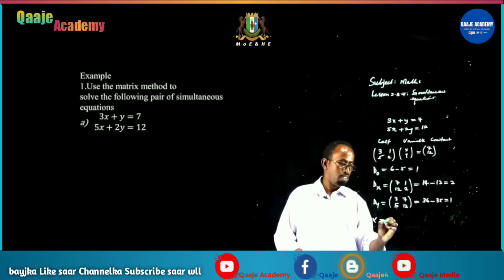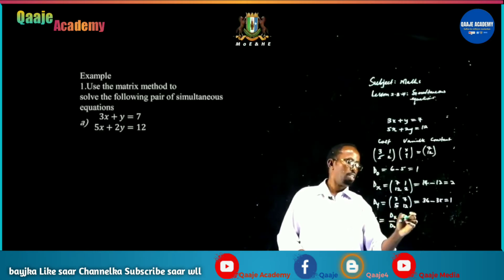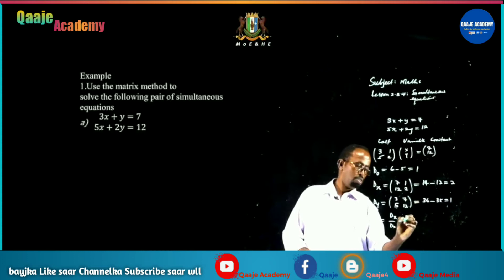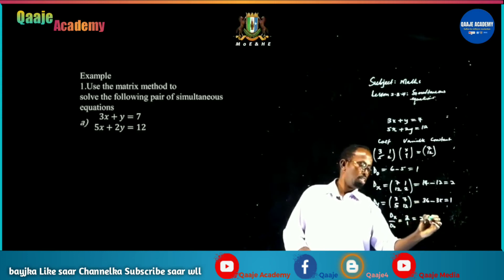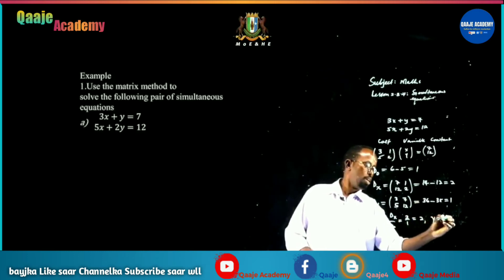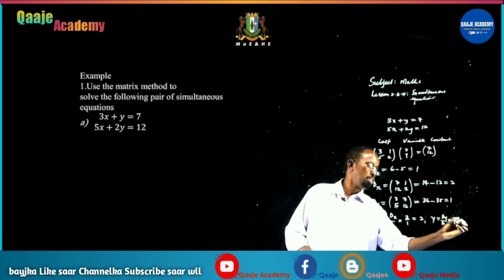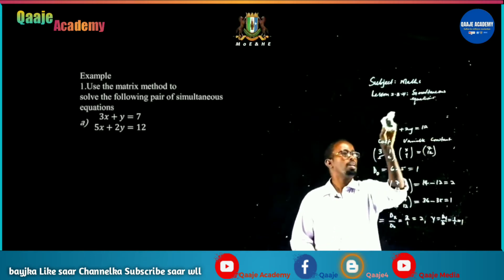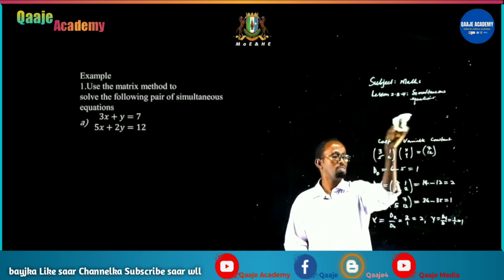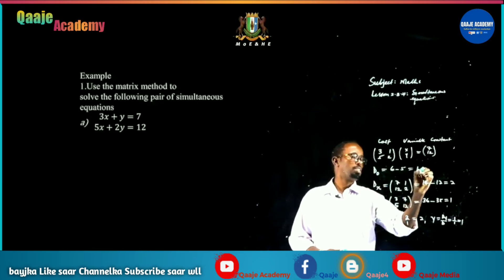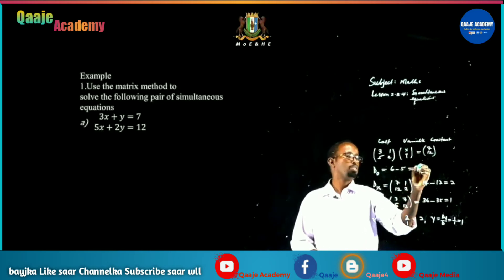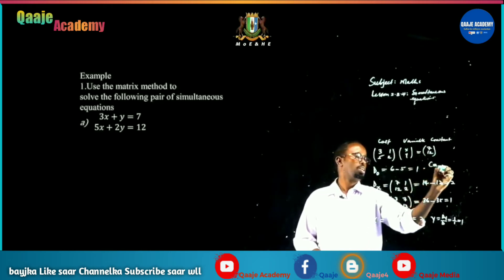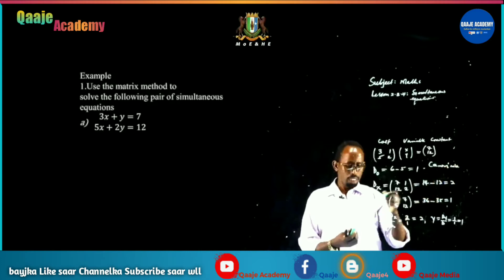The value of x equals d-sub-x divided by D: 2 divided by 1 equals 2. And y equals d-sub-y divided by D: 1 divided by 1 equals 1. That is the solution using Cramer's Rule.